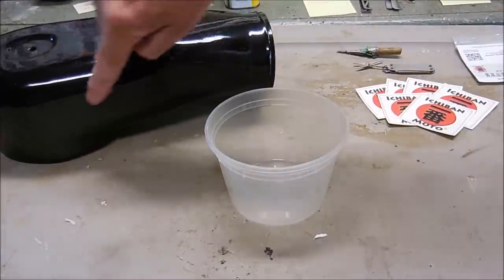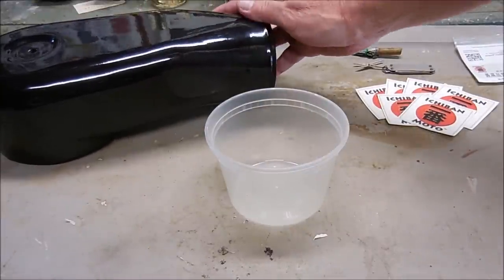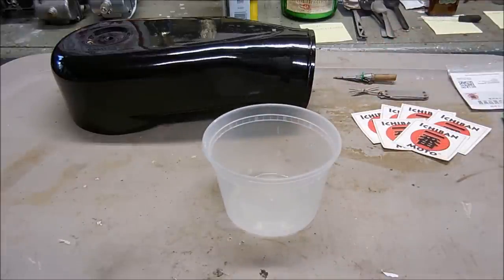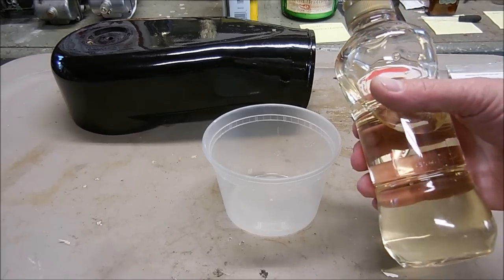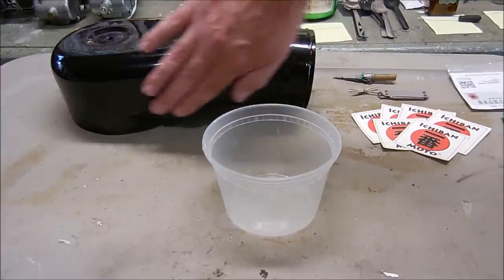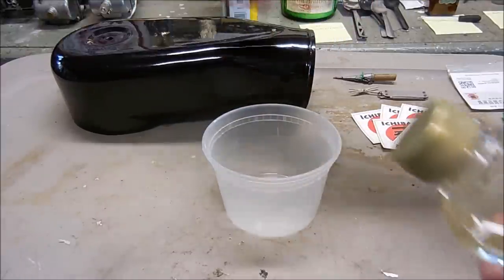You need to make enough just to coat whatever it is that you want to strip the powder coating off of. For the base of the mixture, I'm going to use 50 milliliters of high-fructose gear oil, and what that's going to do is add some viscosity to the mixture and allow it to stick to the sides of the part and not just run off.